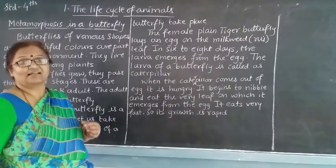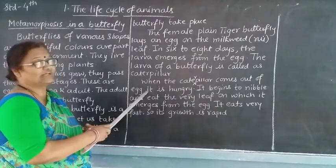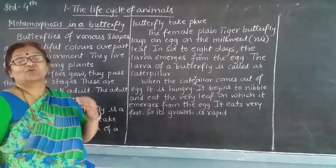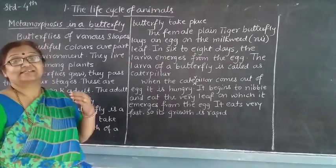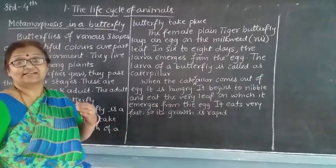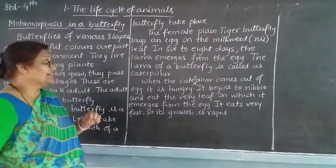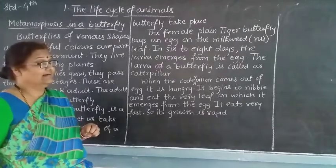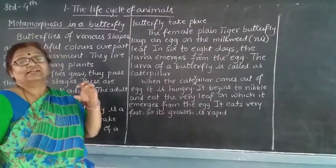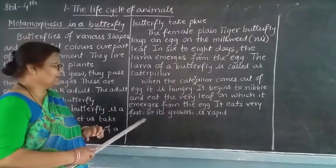The larva is called a caterpillar. When the caterpillar comes out of the egg, it is very hungry — it needs food. So it begins to nibble and eat the leaf on which the egg was laid. It eats very fast.